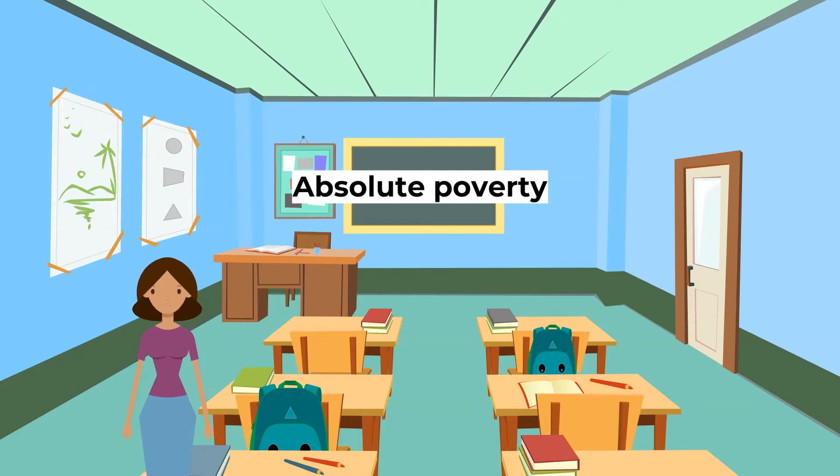Absolute poverty is when people are unable to afford sufficient necessities to maintain life. The UN defines absolute poverty as a condition characterized by severe deprivation of basic human needs, including food, safe drinking water, sanitation facilities, health, shelter, education, and information.